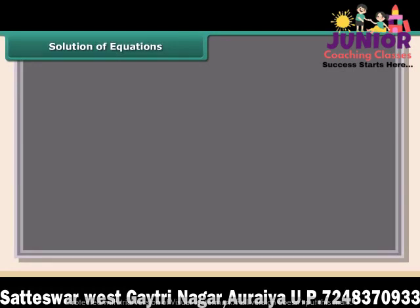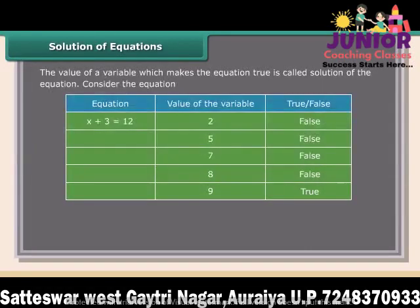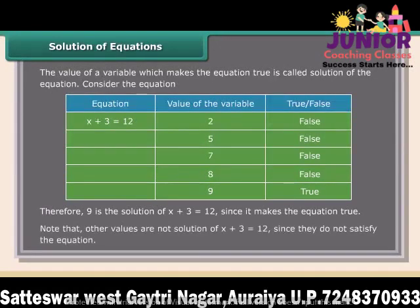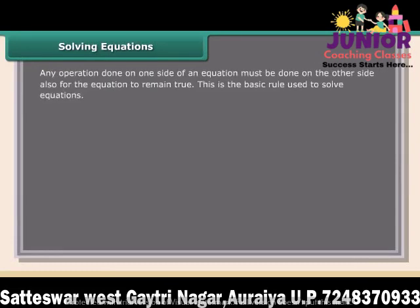The value of a variable which makes the equation true is called the solution of the equation. For example, 9 is the solution of x plus 3 equals 12, since it makes the equation true. Other values are not solutions of x plus 3 equals 12 since they do not satisfy the equation. Any operation done on one side of an equation must be done on the other side also for the equation to remain true. This is the basic rule used to solve equations.